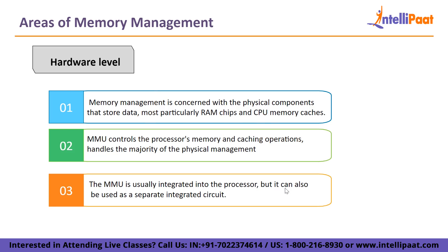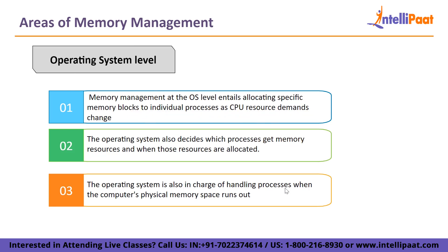Memory management at the operating system level entails allocating specific memory blocks to individual processes as CPU resource demands change. To accommodate the allocation processes, the operating system moves processes between memory and storage devices — that is, hard disk or SSD — on a continuous basis, while tracking each memory location and its allocation status. The operating system also decides which processes get memory resources and when those resources are allocated. An operating system may use swapping as part of this operation to accommodate more processes.